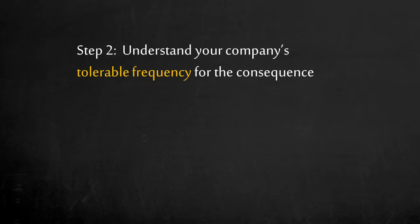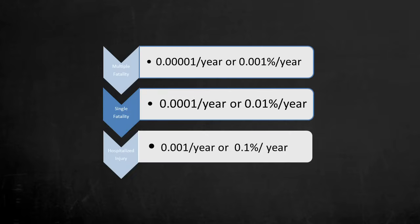Step 2: we need to apply the tolerable frequency of the overpressure of V100, which may result in a fatality. Based on the company defined standards, what can a company reasonably tolerate? How can an engineer demonstrate a design is as low as reasonably practicable? Let's design this process so the consequence of a single worker fatality can occur no more than 0.01% per year.